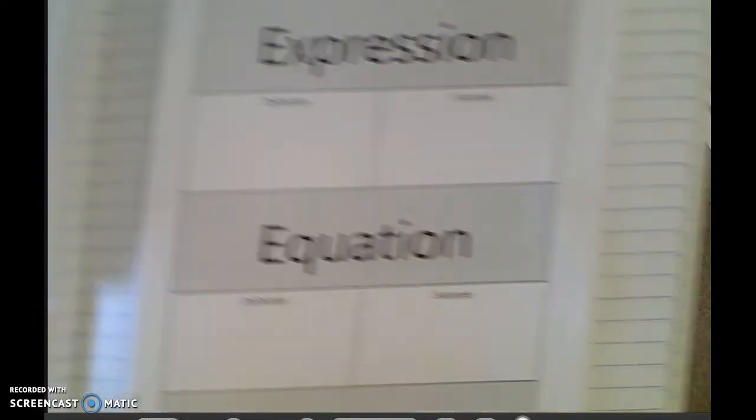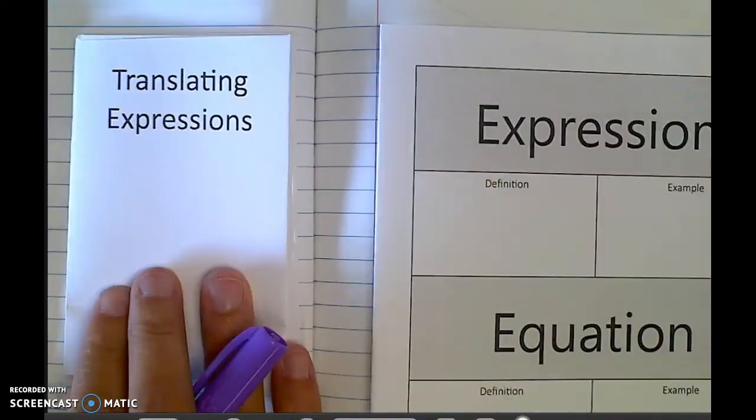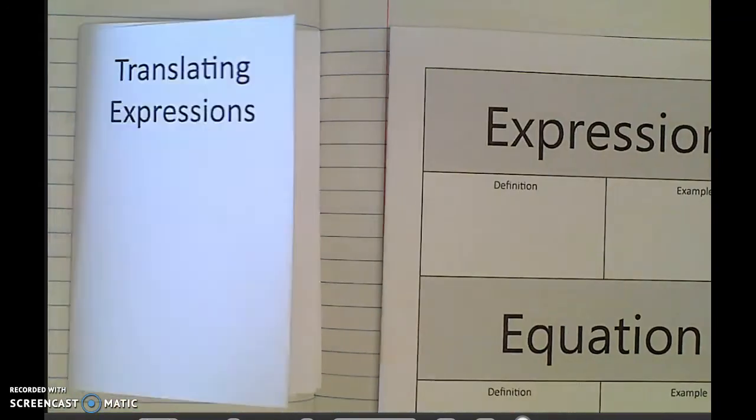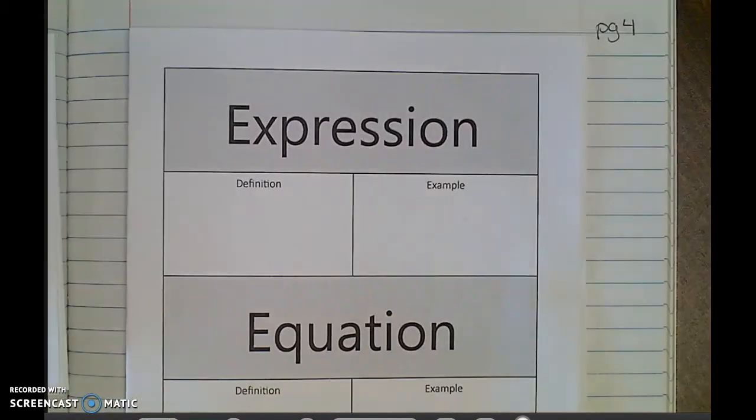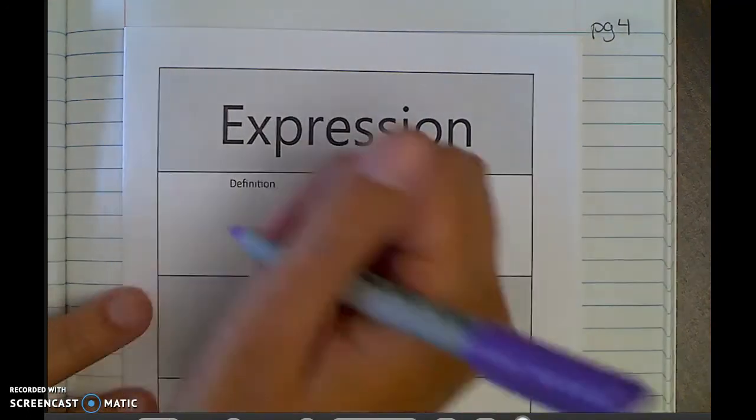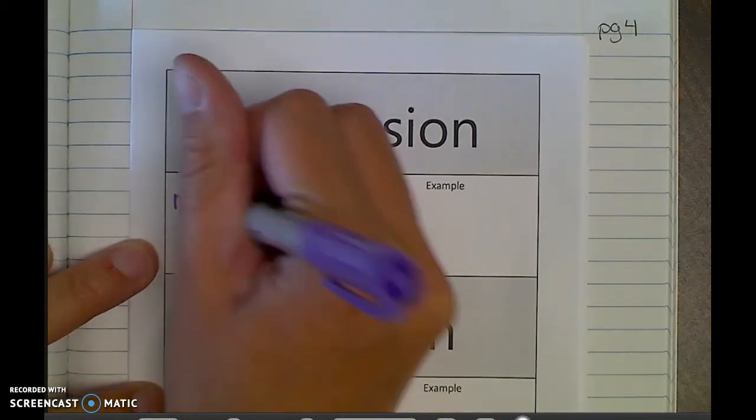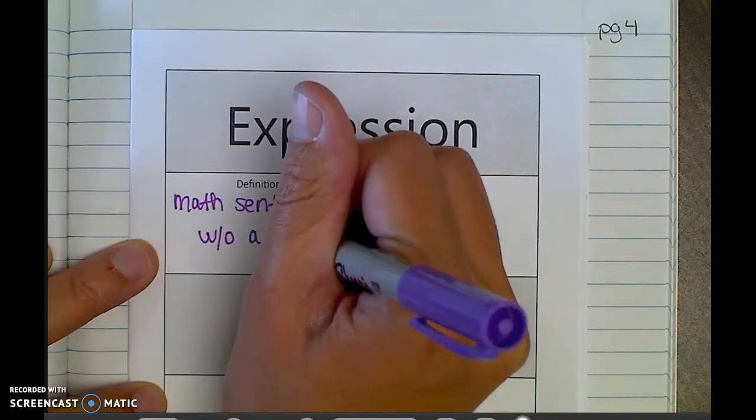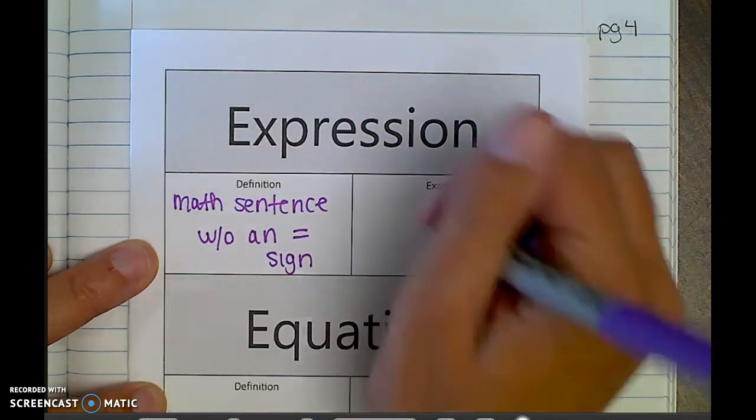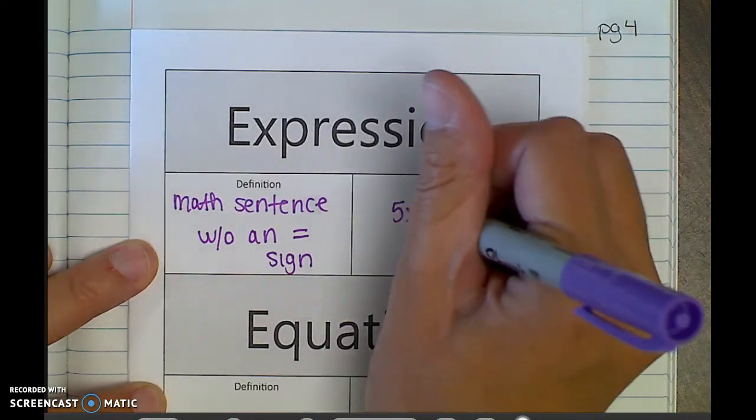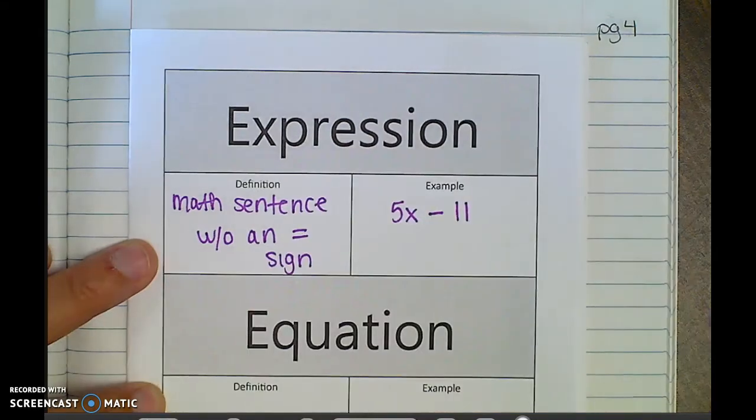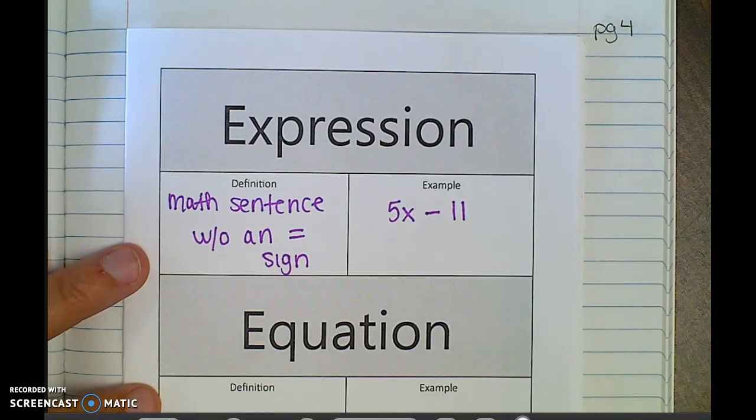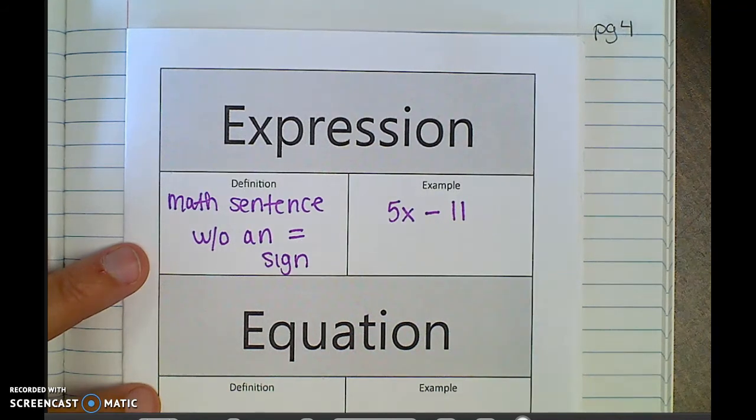What I want to do with you is go through and fill out the front of this. We're going to try our little flip book together and then you guys have a sort to do. So looking here first on page 4, an expression is a math sentence without an equal sign. An example of that might be 5x minus 11. There is no equal sign, I can't simplify it at all. Sometimes expressions you can simplify down to just one number and that's fine. But they don't have equal signs.